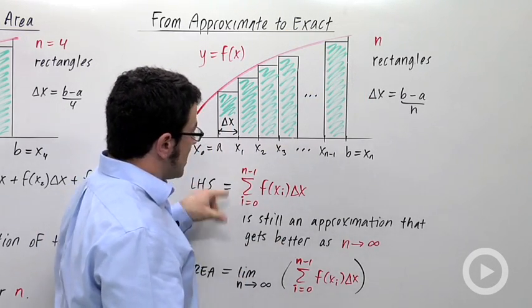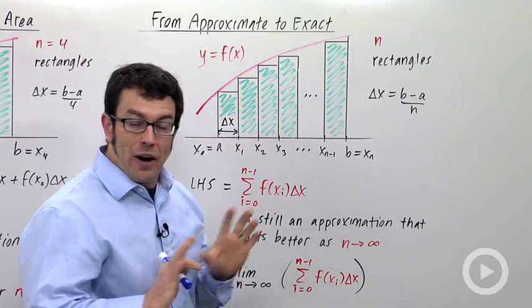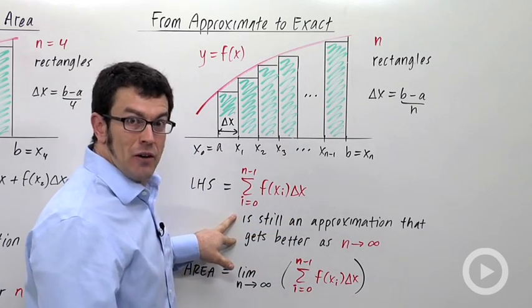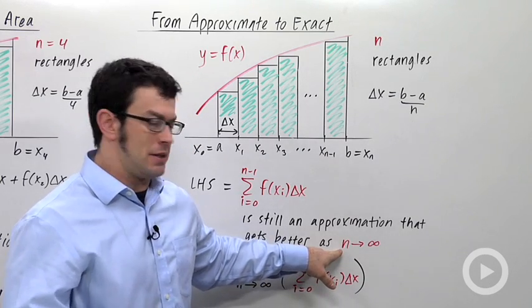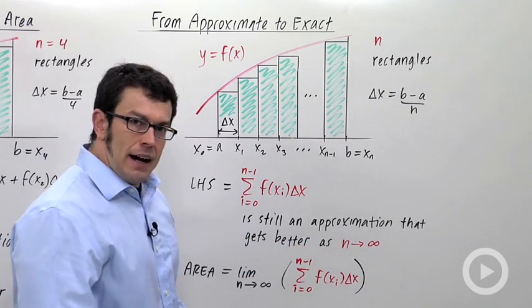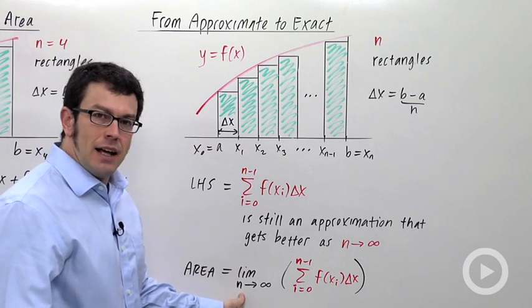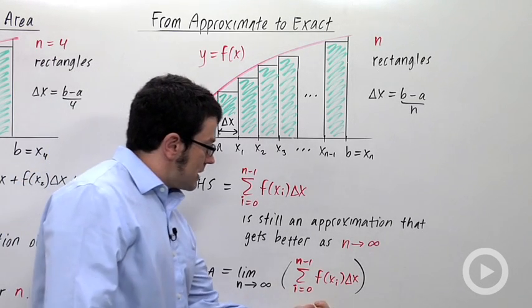We sum from 0 to n-1. This is n rectangles. And it's still an approximation. No matter how big n is, it's still an approximation. It just gets better and better as n approaches infinity. And here's the idea. Here's where the calculus comes in.